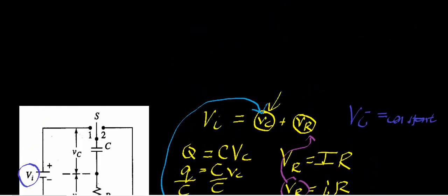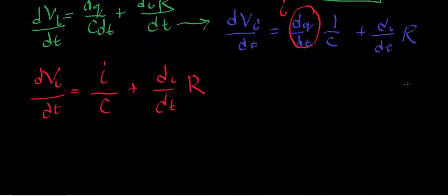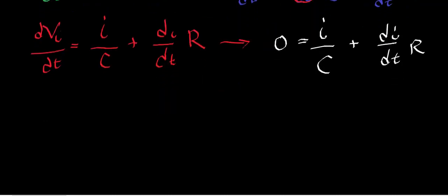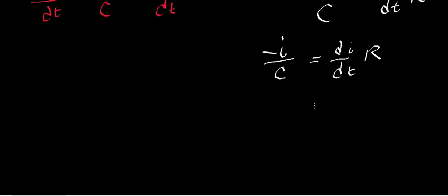The input voltage, big V_i, is constant — it's not changing. So the rate of change of input voltage with respect to time is zero. Therefore: 0 equals i/C plus di/dt times R. Moving i/C to the other side: negative i/C equals di/dt times R. A simple algebraic rearrangement gives us: di/i equals negative dt over RC.